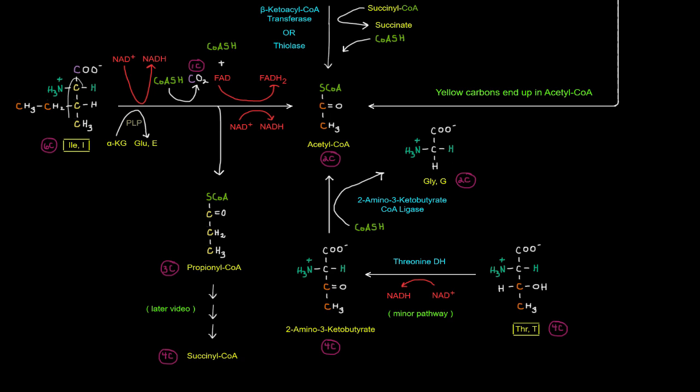And these three yellow ones here end up in propionyl-CoA. So that propionyl-CoA, we'll see in a later video, ends up in succinyl-CoA. But that's not what we're talking about here. The point is that these two carbons end up in acetyl-CoA, which is how isoleucine is degraded to acetyl-CoA. And of course we have some redox reactions there giving NADHs and FADH2s. Now that covers almost all of the amino acids that give rise to acetyl-CoA.